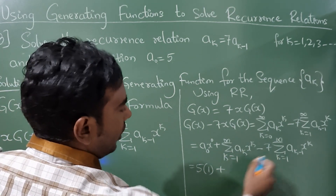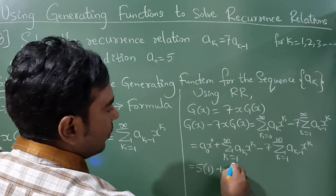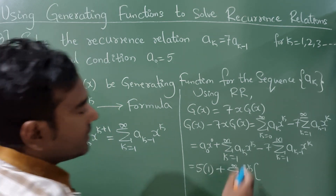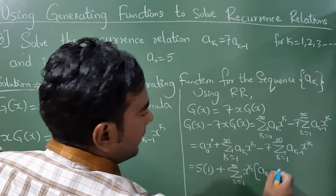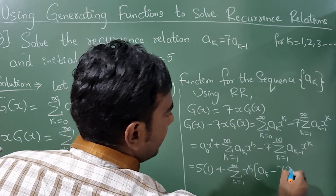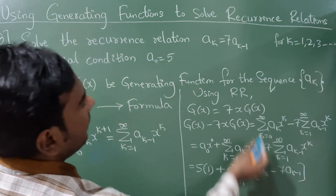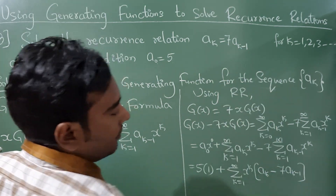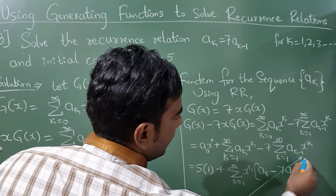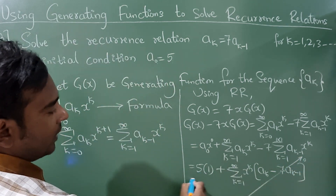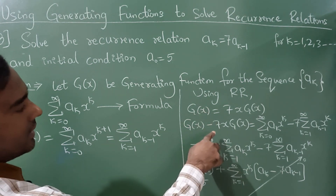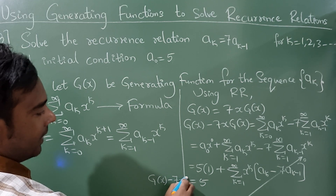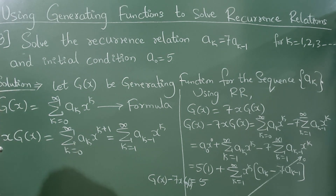Taking x raised to k as common from the two summations leaves a_k minus 7·a_{k-1} inside. From the given recurrence, a_k = 7·a_{k-1}, so a_k minus 7·a_{k-1} equals 0, and those terms cancel. We are left with 5, giving g(x) minus 7·x·g(x) = 5.